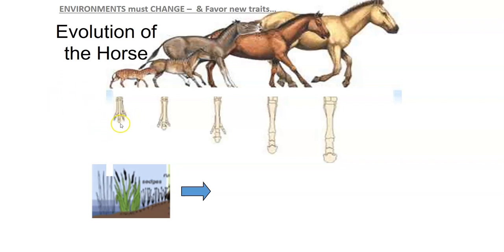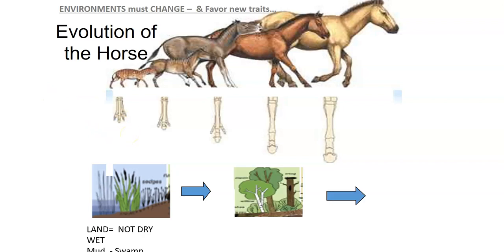As time went on, there are records that the land started to dry up. It's not completely dry, but now it's much less wet and much less mucky, more of a saturated soil. Just at the exact same time period that the land started drying, we start seeing the animals, the horses, with less fingers and less fingers.